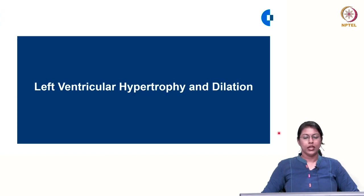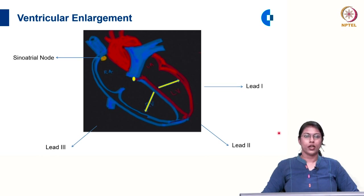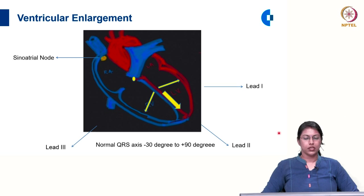Now let us move on to left ventricular hypertrophy and dilatation. The impulses originate from the sinoatrial node, spread to the AV node, and from there the right ventricle is depolarized, then the left ventricle is depolarized. The net vector is in the direction of lead 2, and the normal QRS axis is between minus 30 degrees to plus 90 degrees.